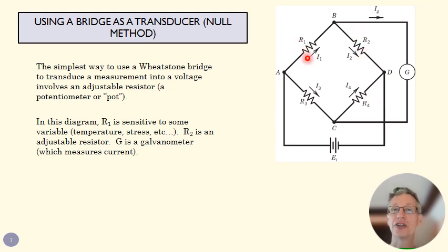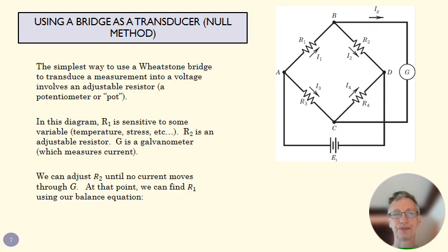And then we can identify the change in resistance of R1 by looking at our potentiometer and seeing where we've set that and what the resistance of R2 is, and then use our balance equation to figure out what R1 is.